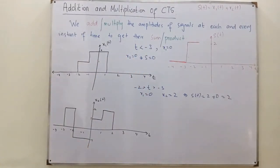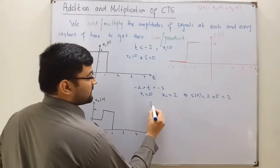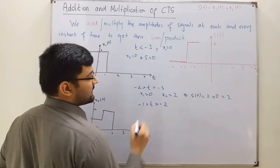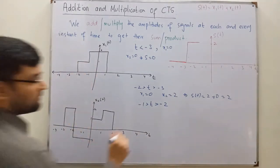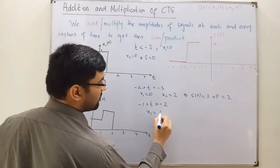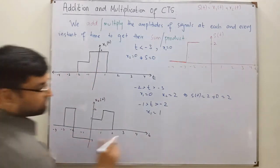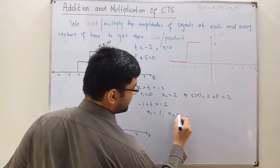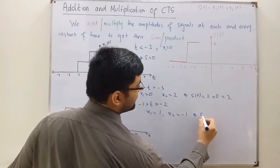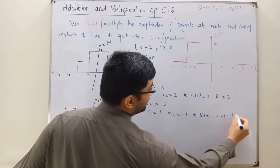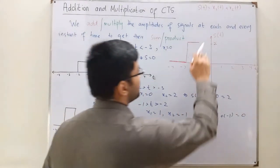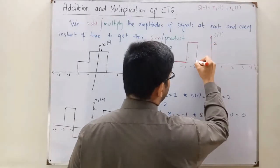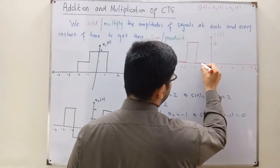From negative 2 to negative 1: when t is greater than negative 2 and less than negative 1, x1 is 1 and x2 is negative 1. So their sum would be 1 plus (negative 1), which equals 0. For this interval the sum jumps to 0 and stays 0 until negative 1.